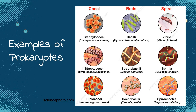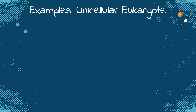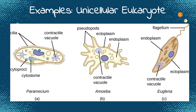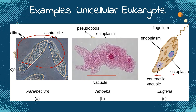Here are examples of prokaryotic cells — the different shapes of bacterial cells. We have the rounded ones or cocci, the rod shape or bacilli, and the spiral, which includes the vibrio, spirilla, and spirochetes. Here now are the examples of unicellular eukaryotic cells. From the group of protists, we have paramecium — sometimes called the slipper-like animal — amoeba, and euglena. If you look at these unicellular eukaryotes under a microscope, you will see what they look like.